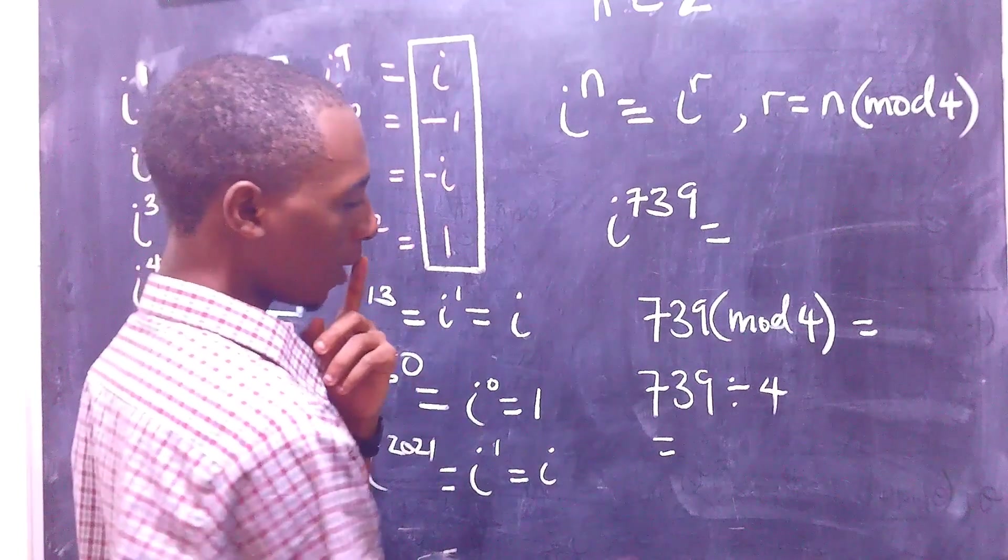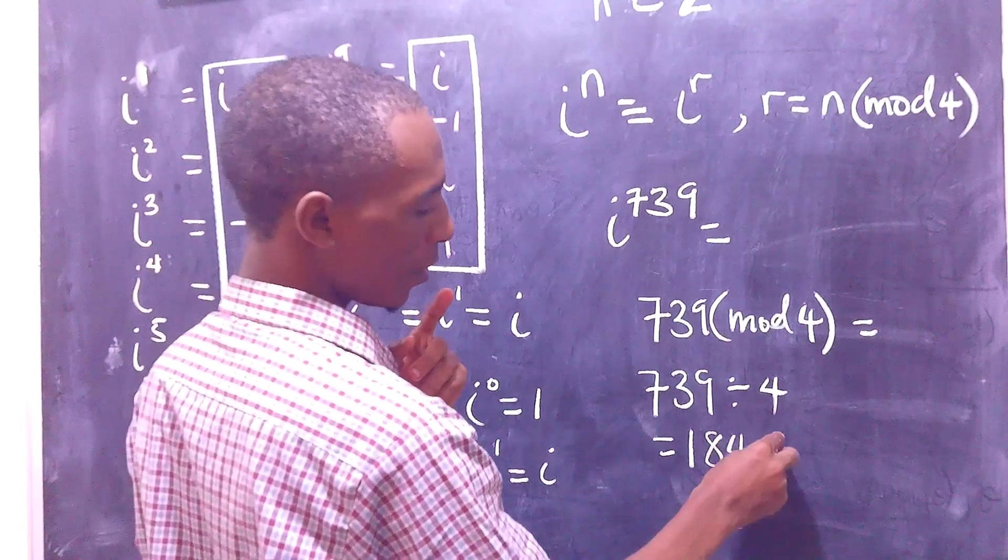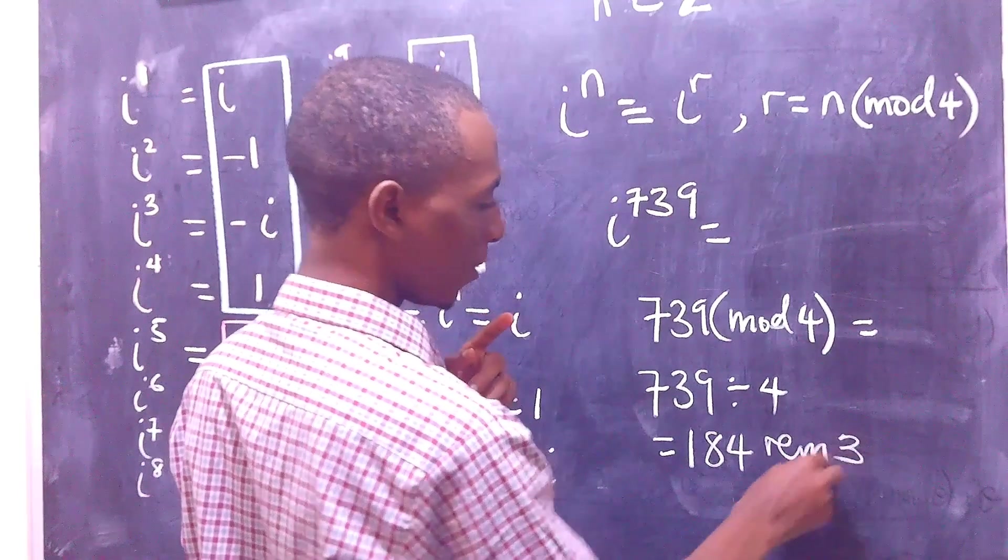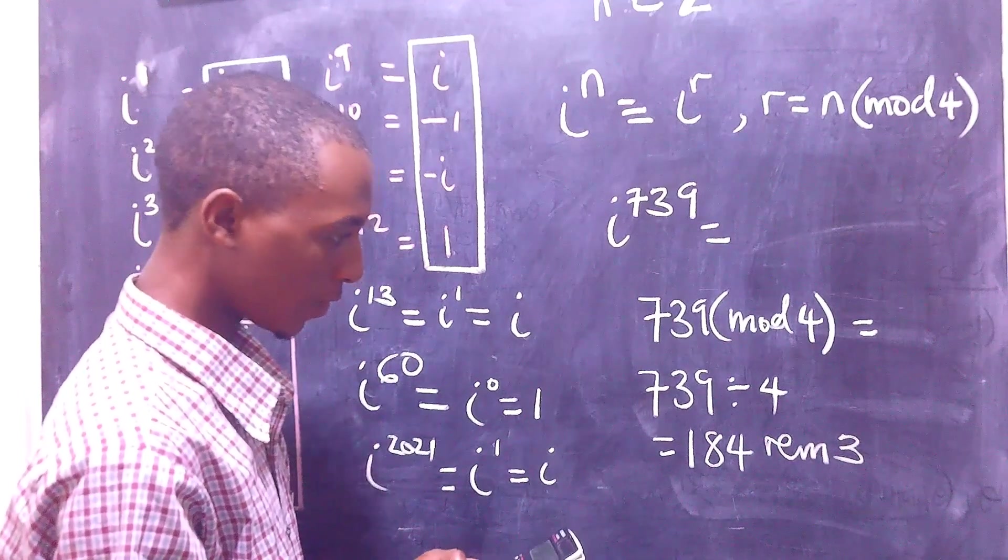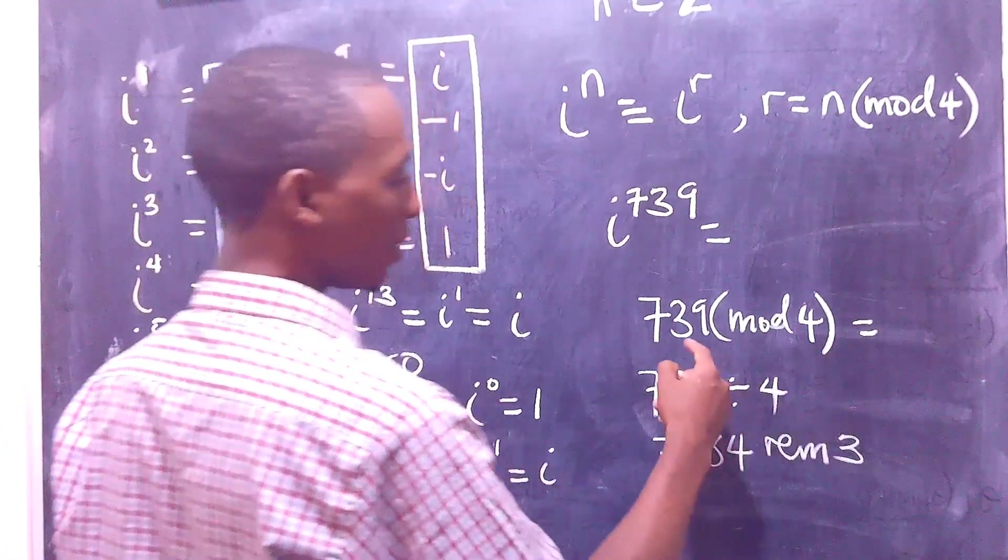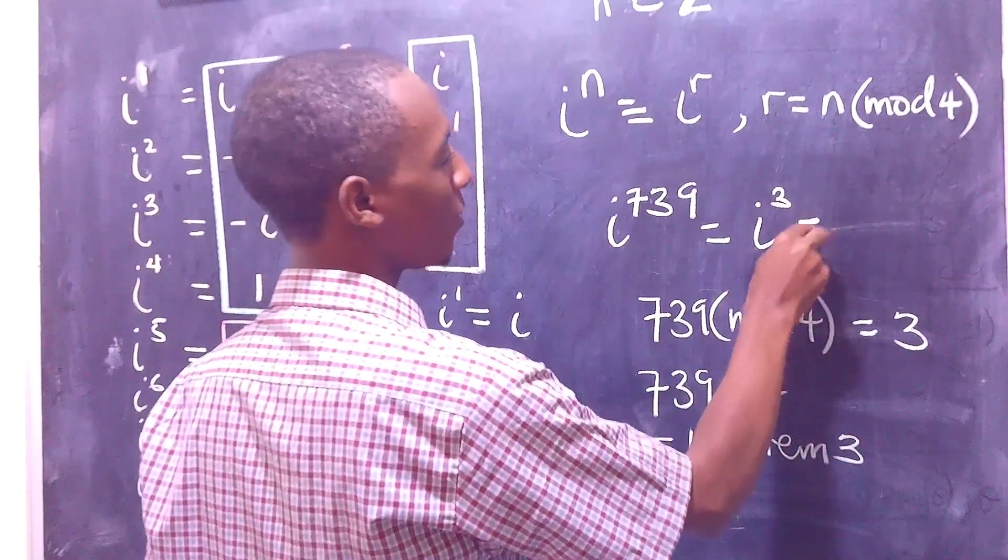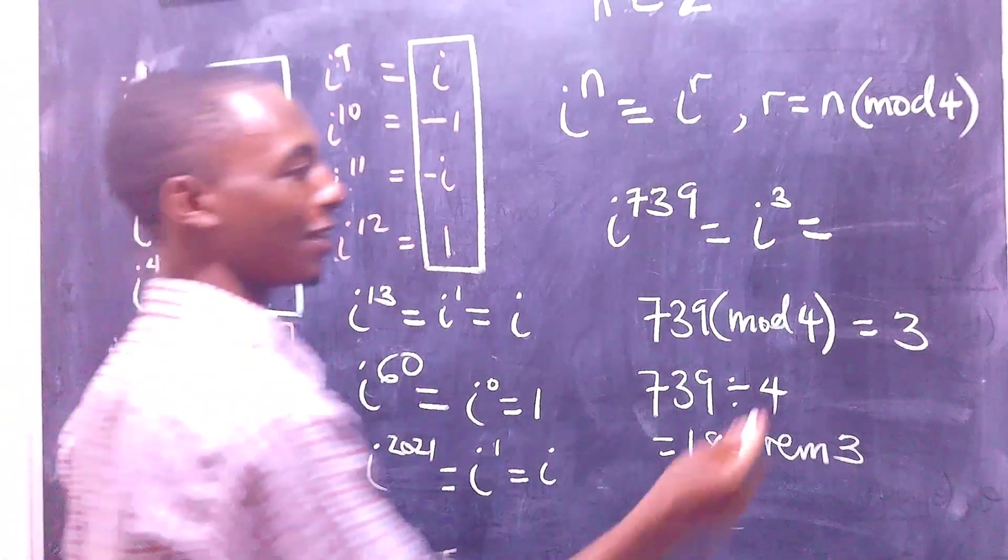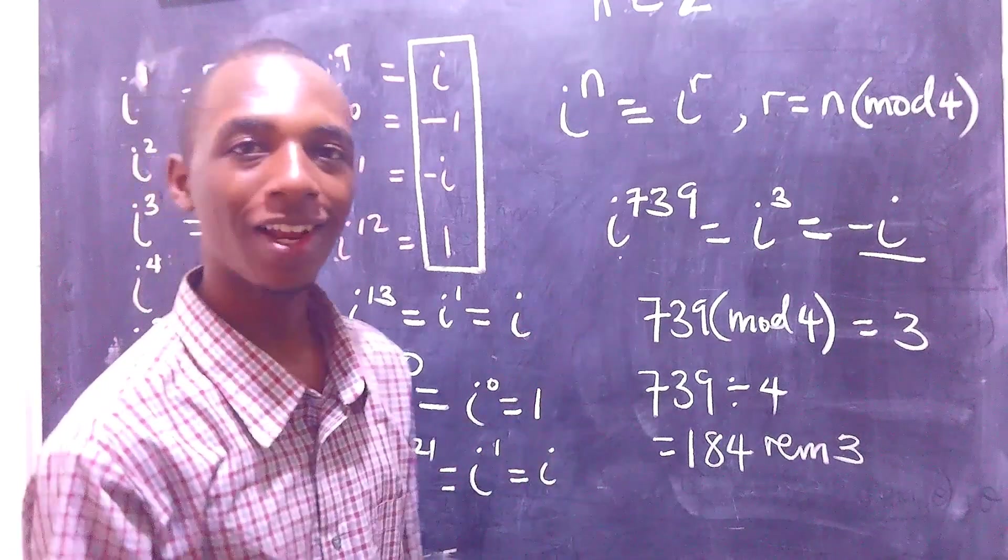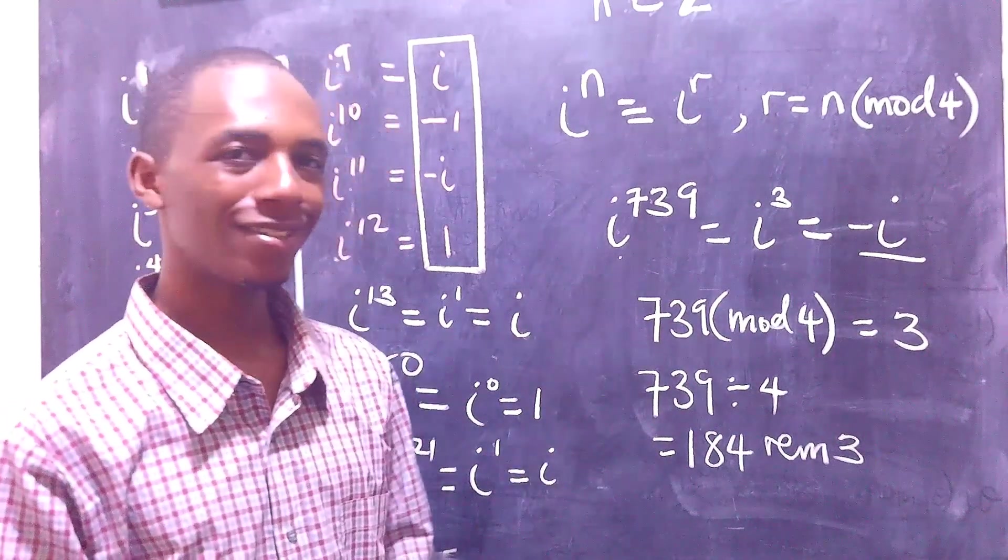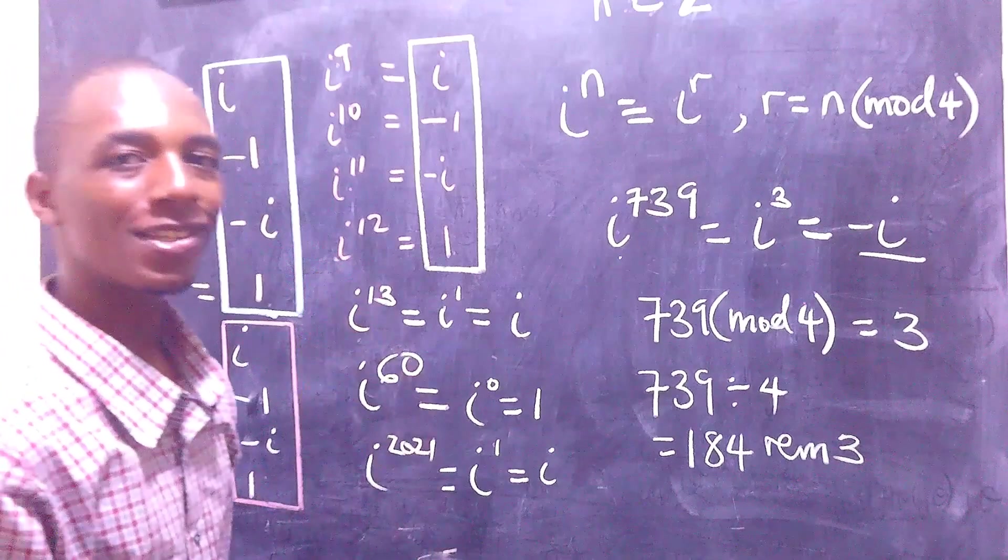...that's going to give me 184 with a remainder of 3. Let's see, 184 times 4 is 736, yeah that's it. So this is actually 3, so i to the power 739 is the same as i to the power 3, and we already know i to the power 3 is just negative i. So using this, you can actually calculate any power of i, regardless of how big it is, because it will always come back to only these first four answers that we have here.